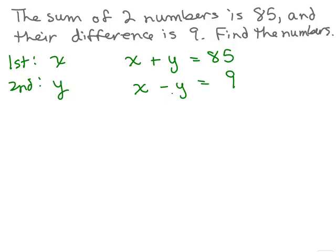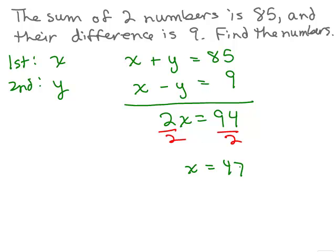Now this one, this looks like the addition method's going to work nicely because the y's will cancel out. So I have to add the left-hand side, 2x equals 94, divide both sides by 2, and I get x equals 47.